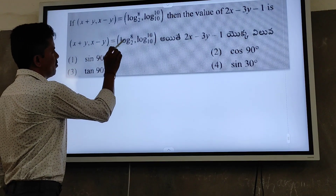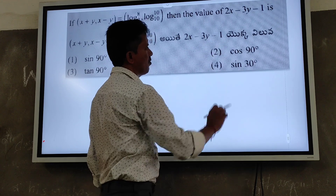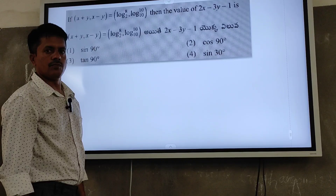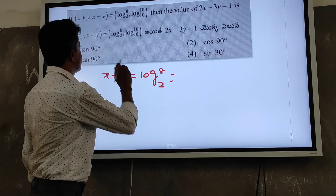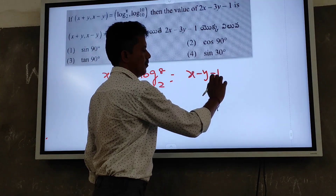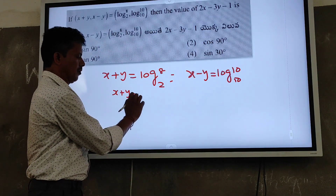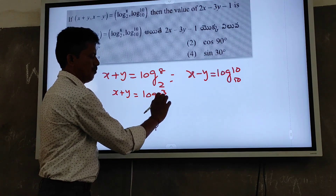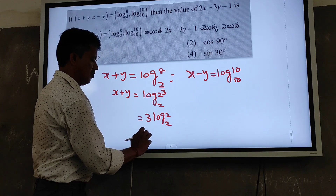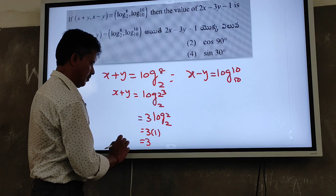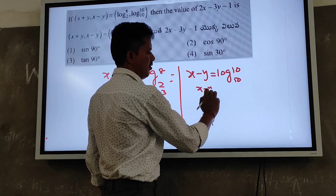x + y comma x − y is equal to log 8 base 2 comma log 10 base 10. Find 2x − 3y − 1. x + y equals log 8 base 2 equals log 2³ base 2 equals 3. x − y equals log 10 base 10 equals 1.